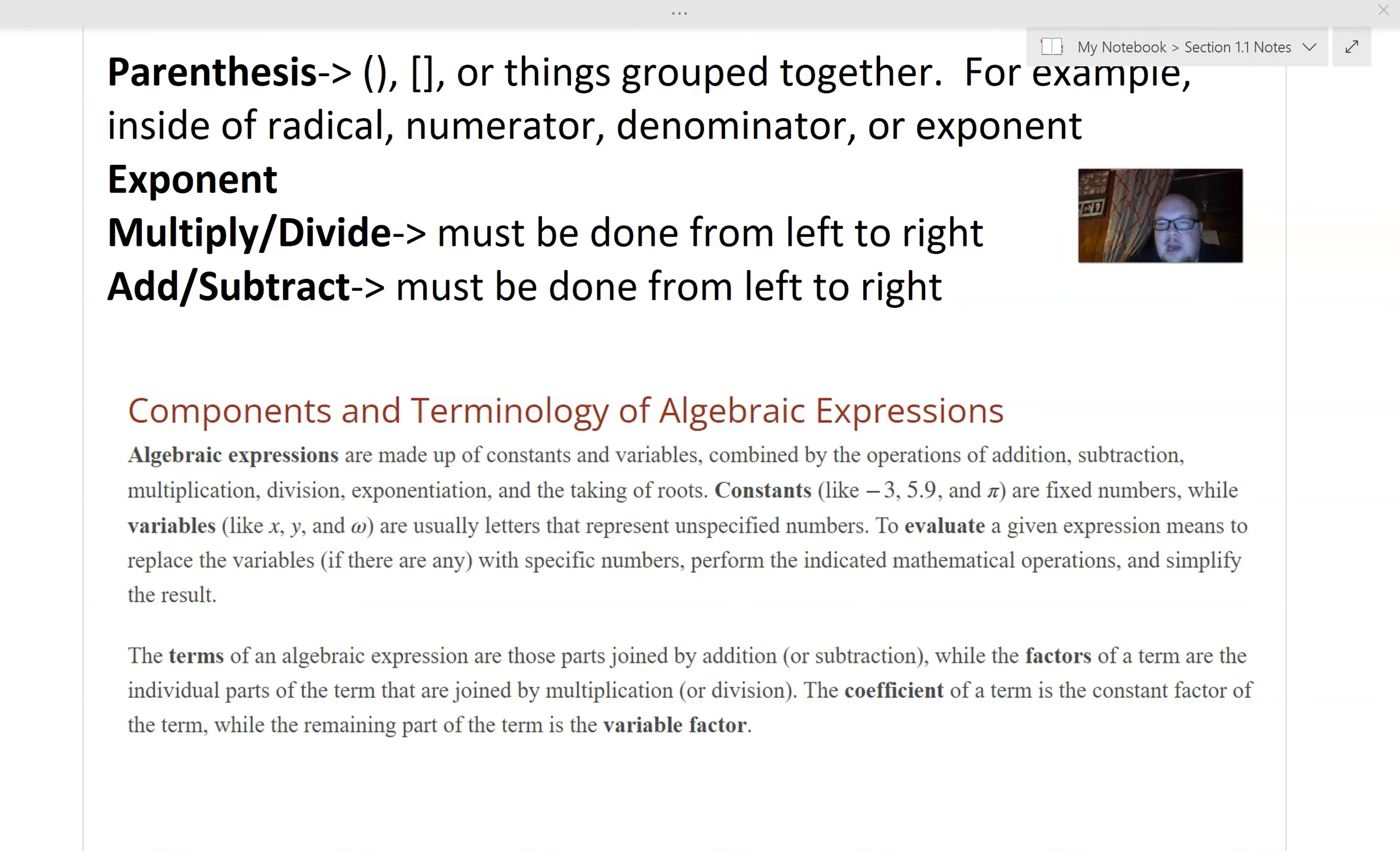Now, constants are anytime you see a number without a variable attached. So if you see something like plus 5 or minus 7 or minus a half, variables are letters X, Y, Z, W. You can also go into some Greek letters.